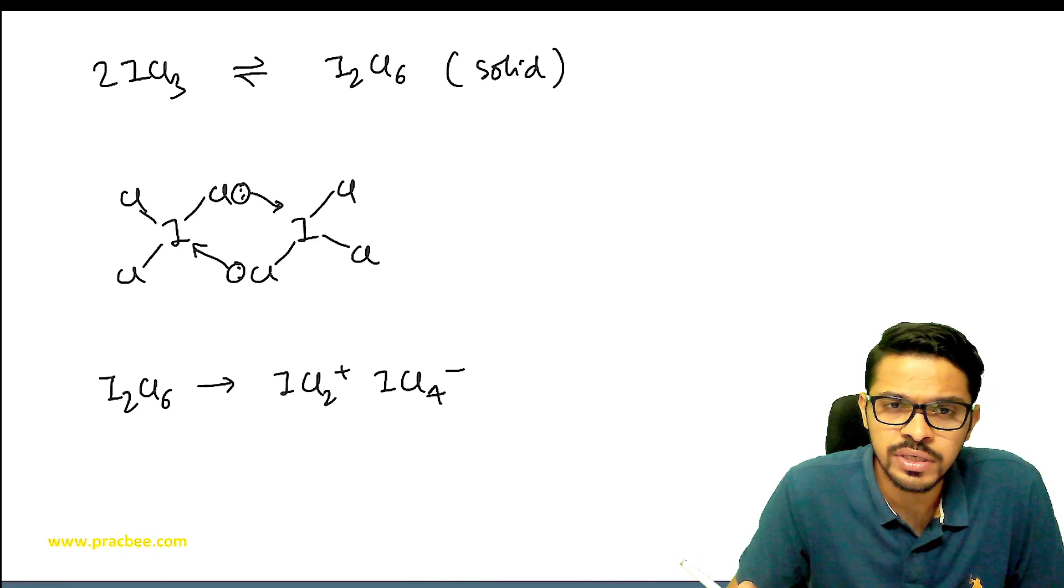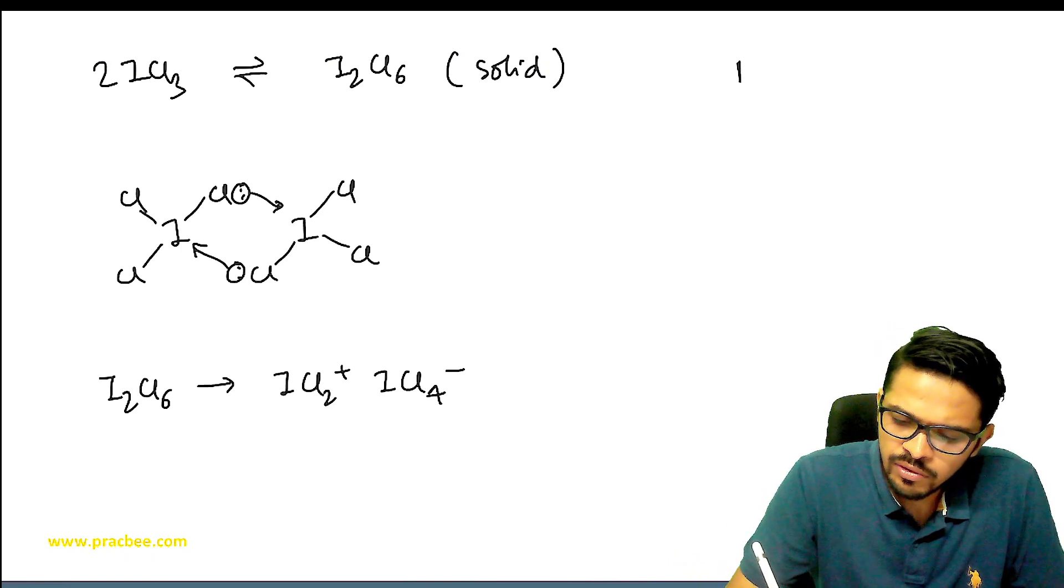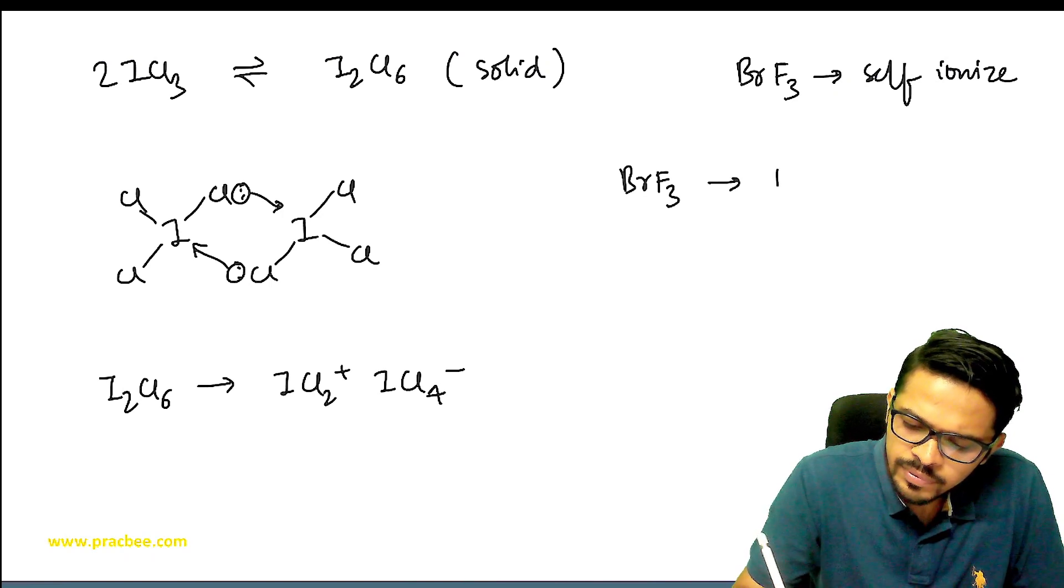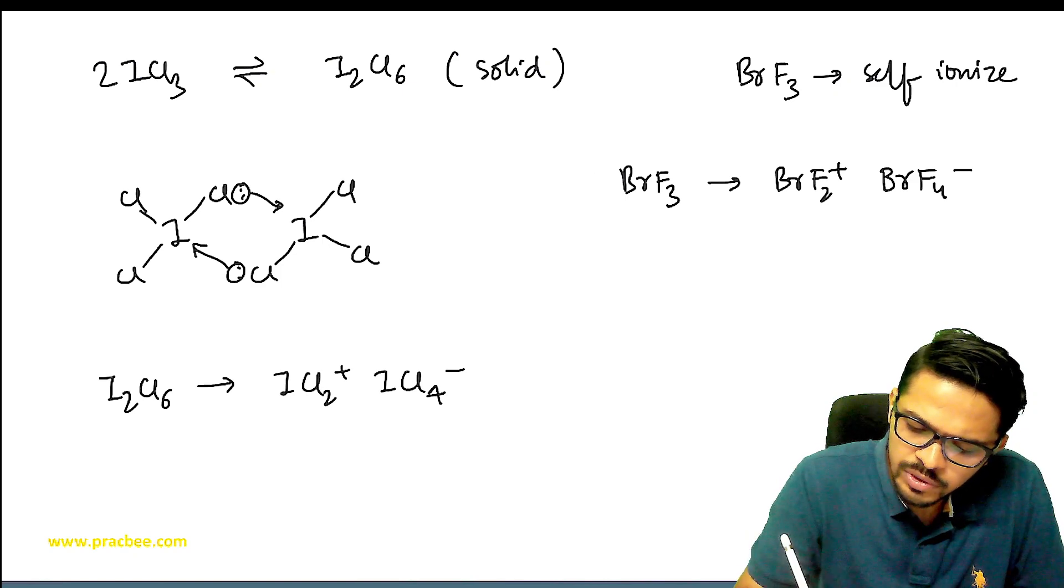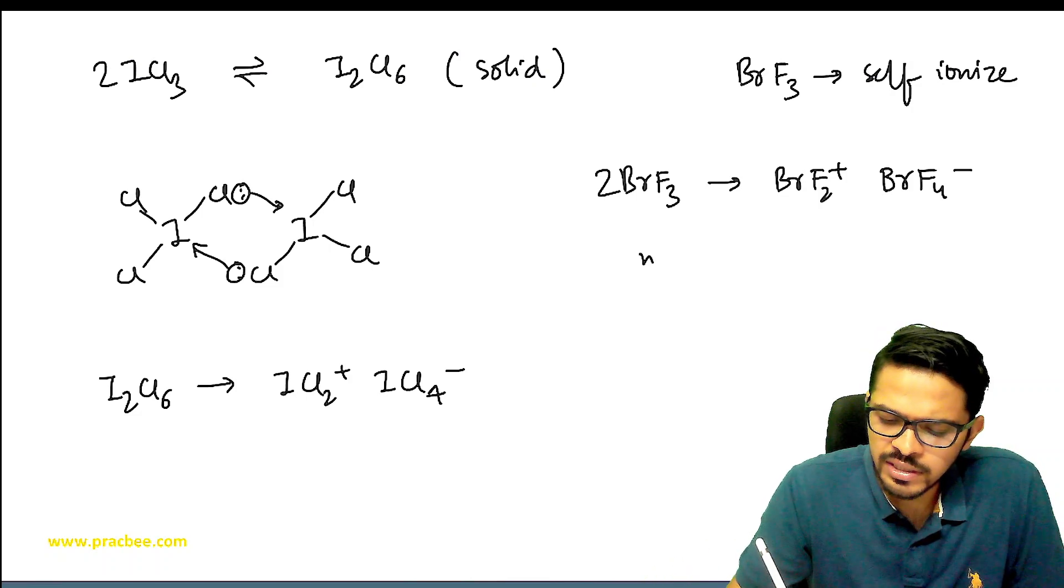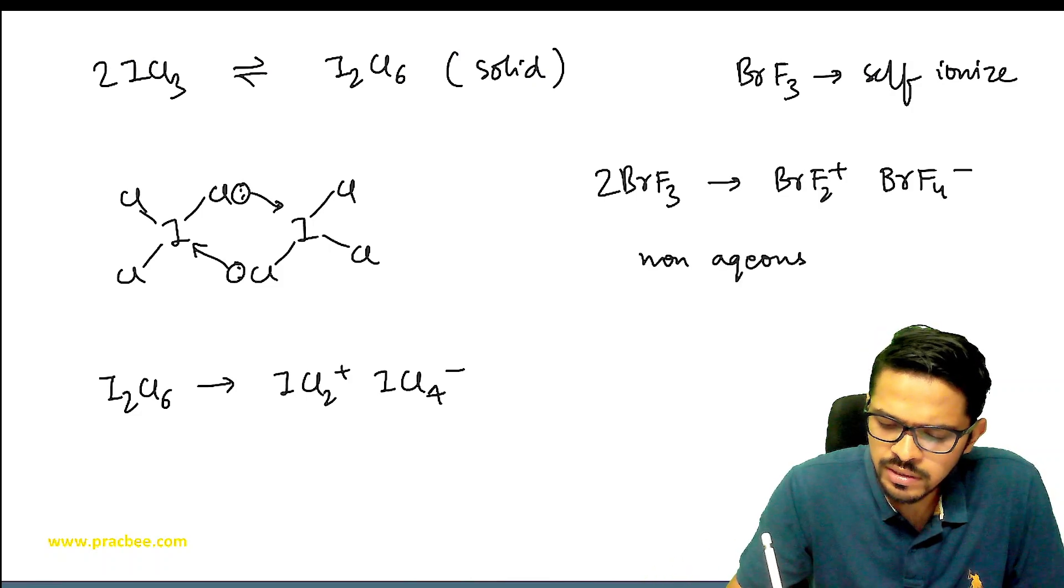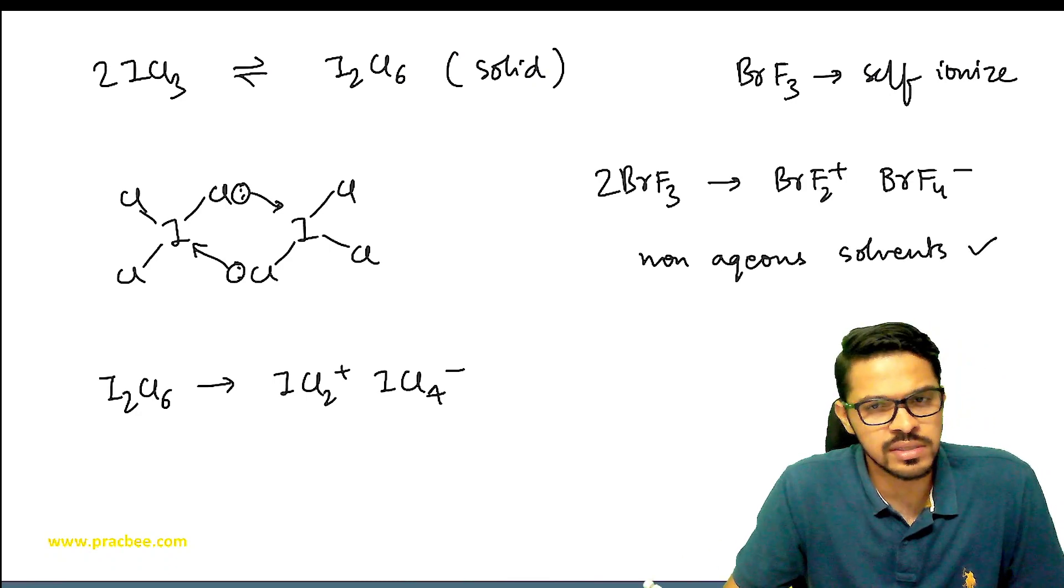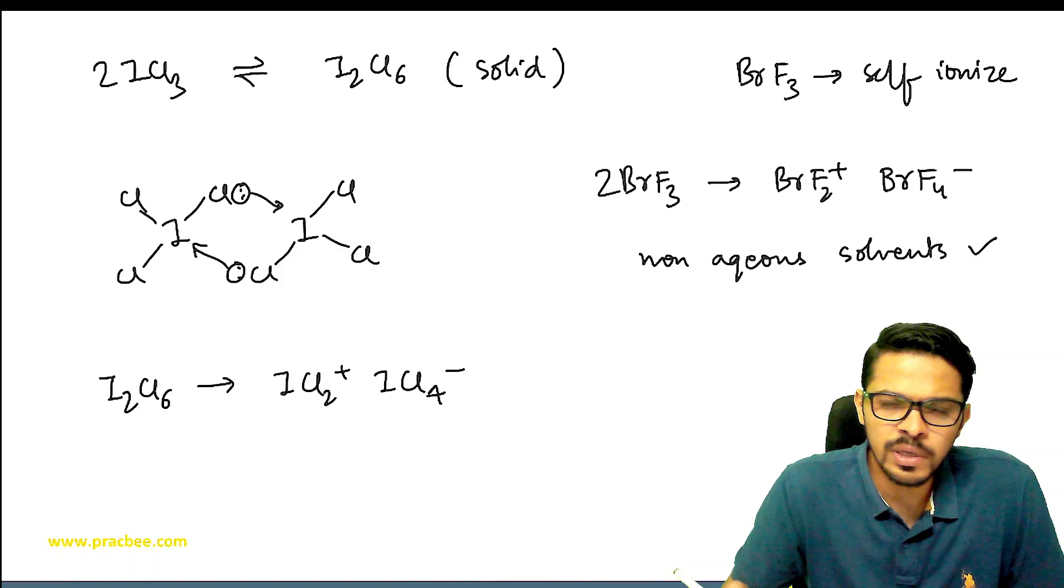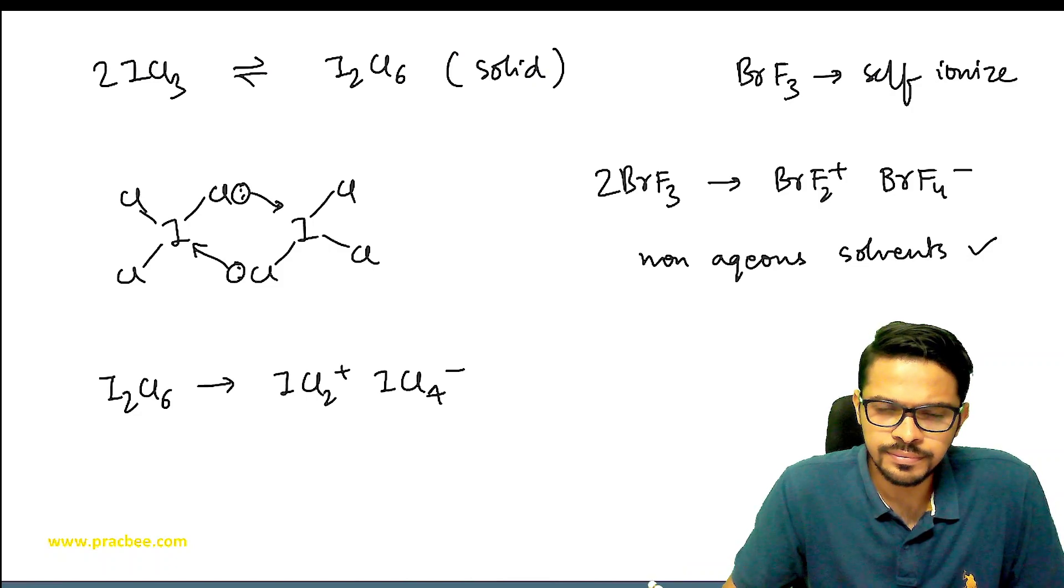Many interhalogen compounds self-ionize. For example, BrF3 can self-ionize. Self-ionize means BrF3 breaks into BrF2+ and BrF4-. Therefore, it has been seen that these are used as solvents. They are used as non-aqueous solvents, because like water which ionizes into ions, similarly these also do that work.